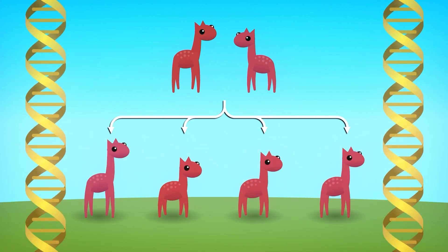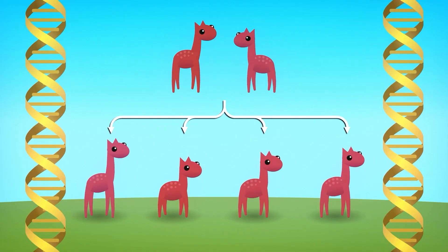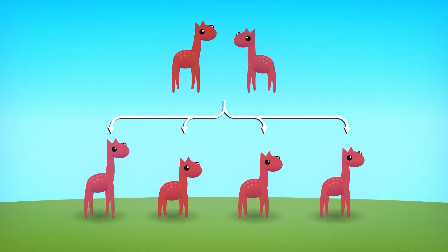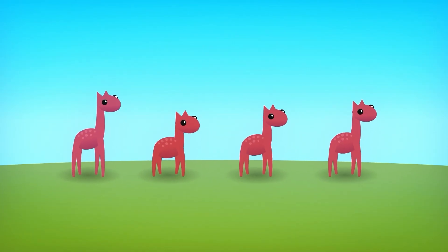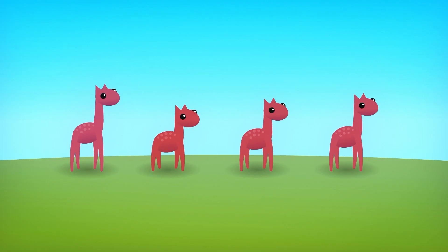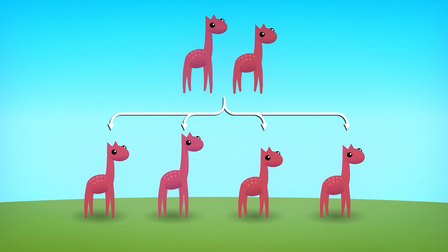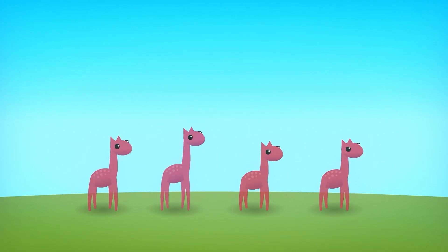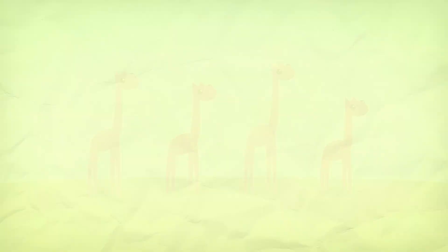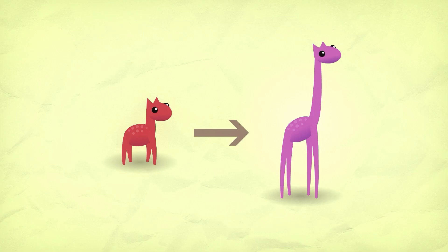But as a result of the combination of the parents' genes and random genetic mutations, the offspring differ from each other in their characteristics, and some are adapted to their environment even more than their parents. Generation after generation, the taller animals tend to survive and reproduce, while the shorter ones dwindle. Thus, in a slow and gradual process, which may stretch over millions of years, the population on the island changes completely.